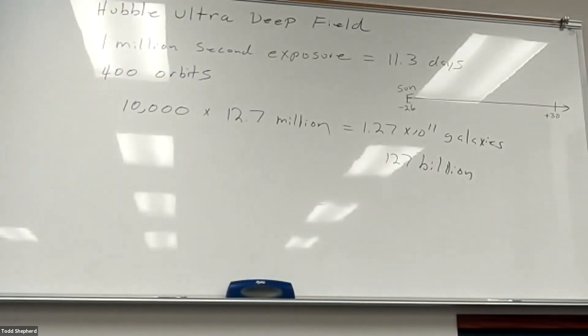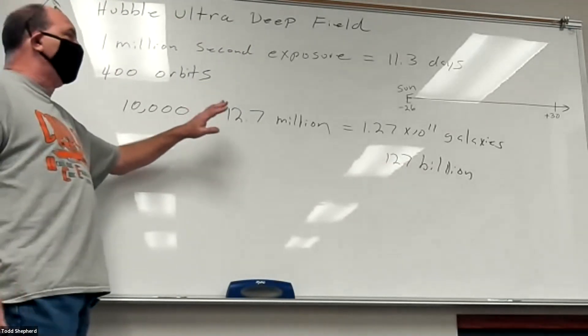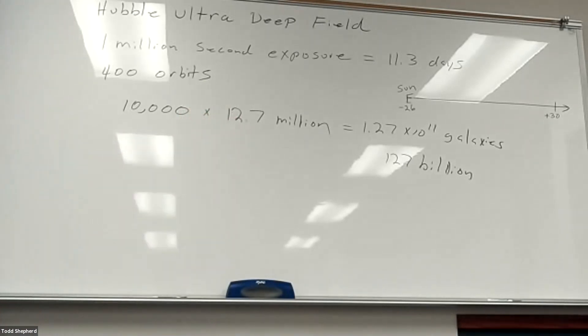If you assume that every galaxy has roughly about 400 billion stars in it, like the Milky Way galaxy does, well 500 billion times another 400 billion - there's a lot of billions in there, a lot of zeros. So this is what we're dealing with now. That was done back in the early 2000s. Hopefully there will be more accurate studies done later.